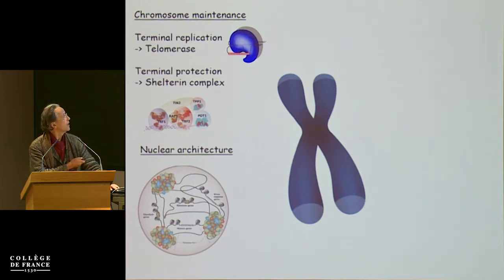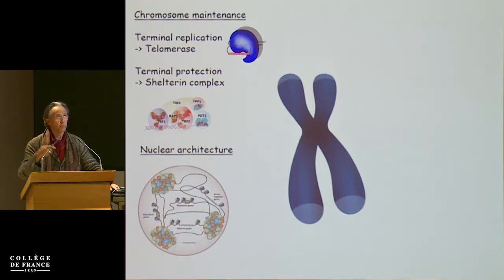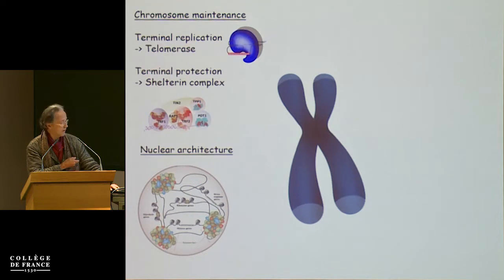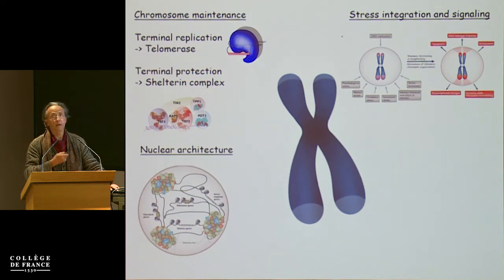Telomeres have many other functions we are discovering one after another. As a reminder, they are also involved in general nuclear architecture. In a yeast nucleus, telomeres are close to the nuclear periphery where they form a kind of silencing compartment — meaning they influence the transcription of genes close to them, but sometimes also genes located far away. This means they have an influence on the whole genome transcriptome, and this is directly related to what I will tell you today.